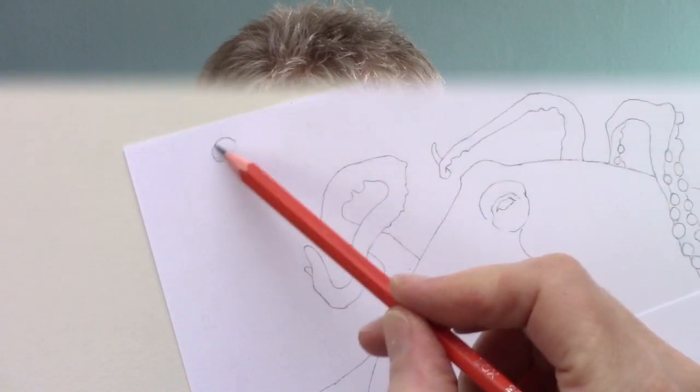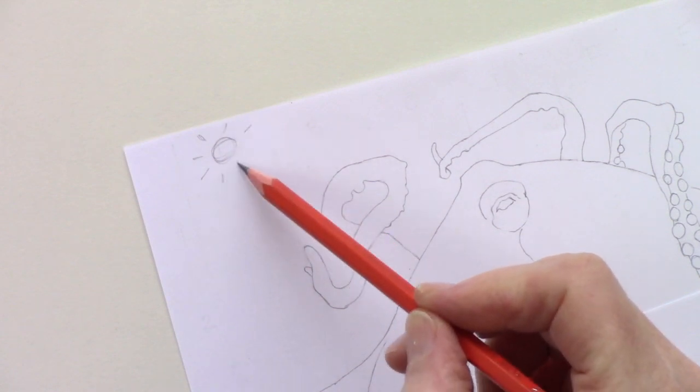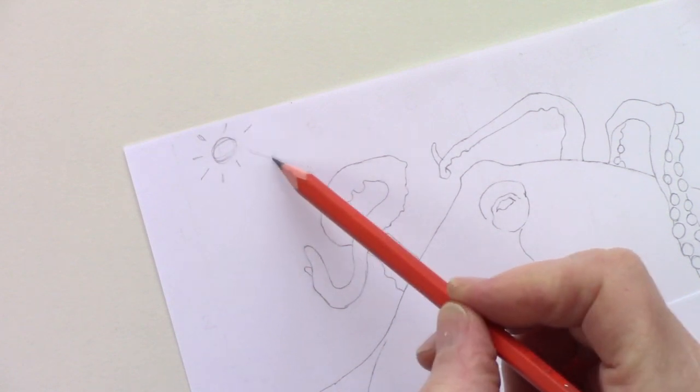When you're drawing something, and you've got to be shading it in too, it's always important to know where the light's coming from. In the top left hand corner, I draw a little diagram of a sun with an arrow, just to remind me of the light direction. I can rub this out when the project is finished.